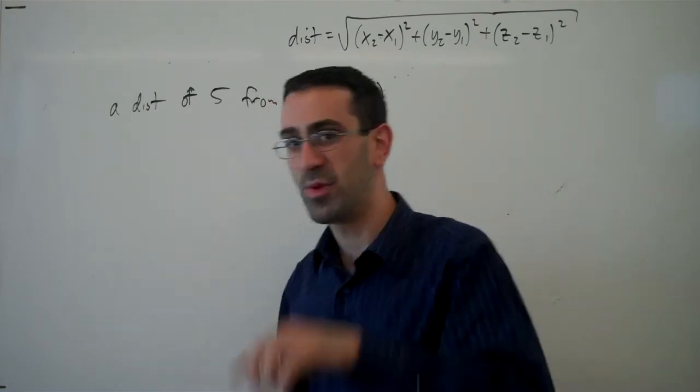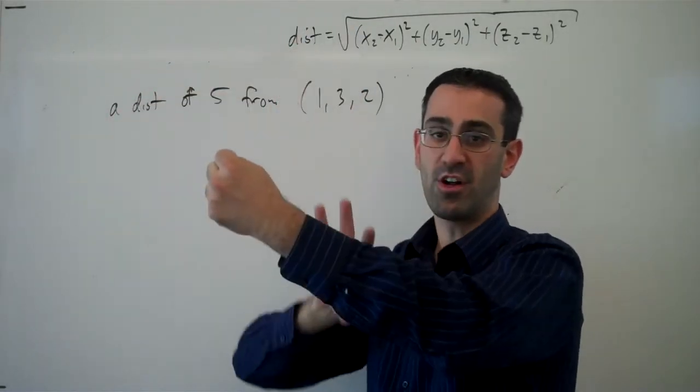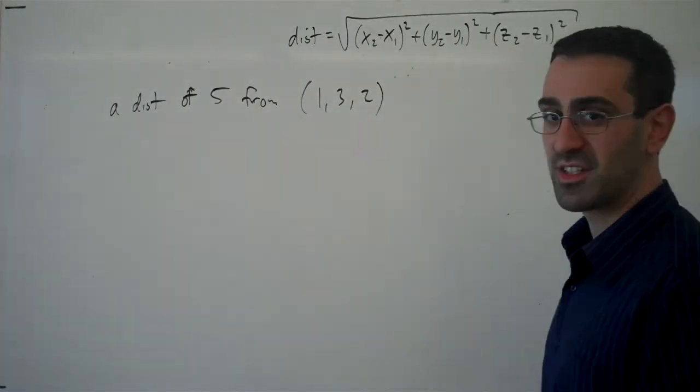In three-dimensional space, if we have a point, all the points equal distance away are going to form a ball, or more formally, a sphere. And so this is going to give us a sphere.